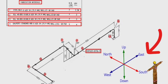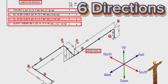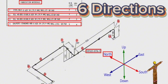There are six directions here: north direction, south direction, east direction, west direction, up direction, down direction. The man who reads the isometric must think that he is in the middle of these directions. His face will be to the north, his back to the south, his right hand to the east, and his left hand to the west.